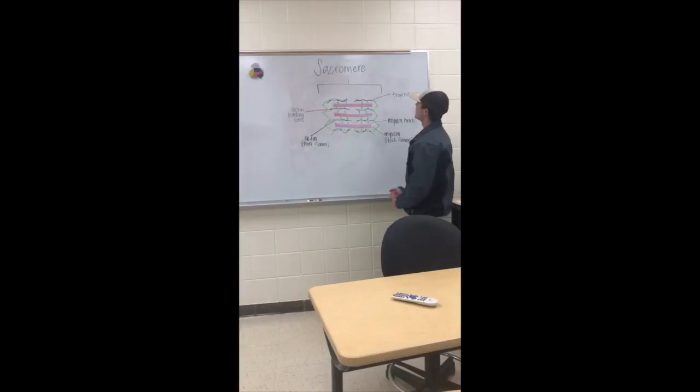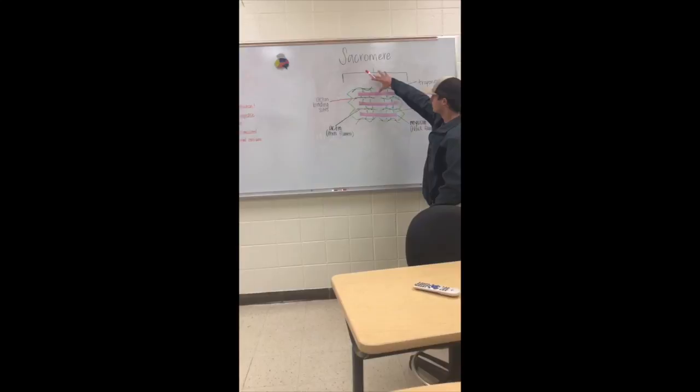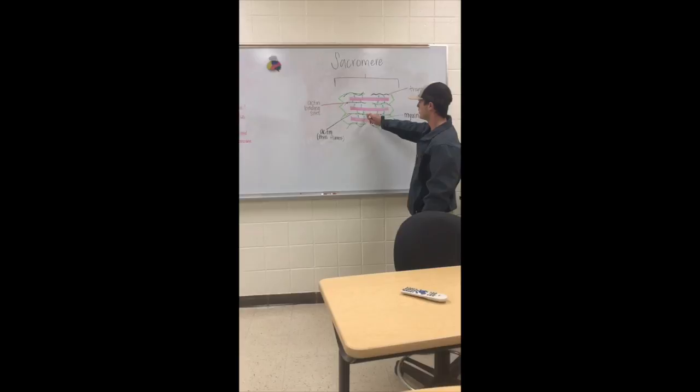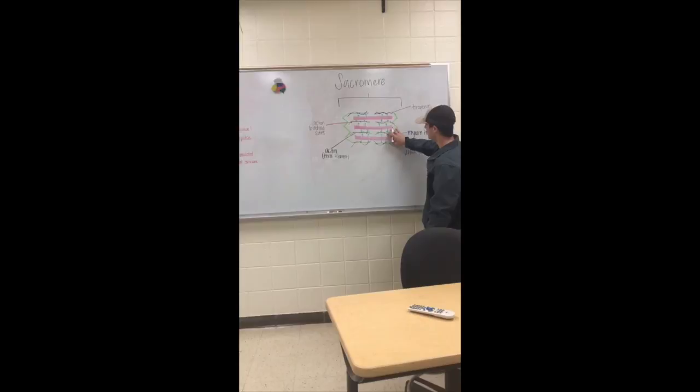When your brain sends a nerve impulse, it will stimulate your sarcoplasmic reticulum and release calcium throughout. It will release it through the T-tubules, making the troponin bind with the calcium, leaving the actin binding sites open. For a connection to occur, we must have ATP, which is the energy source used in muscle contraction.